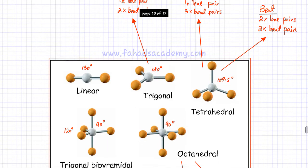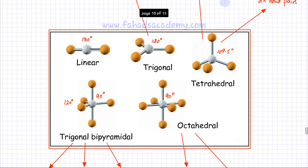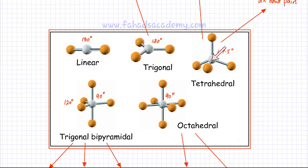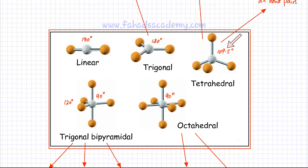The next basic shape is a tetrahedral shape. A tetrahedral shape has four bonding pairs of electrons — four bonds — with one bond coming out of the page and one going into the page. All the angles are going to be 109.5 degrees between the bonds. This is a tetrahedral shape where four bonds would try to be as far away from each other as possible in three-dimensional space.